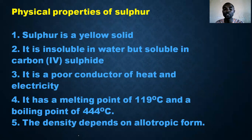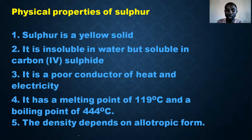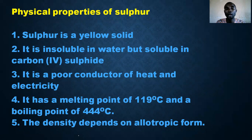Finally, the density of sulfur depends on its allotropic form. Different allotropes do not have the same density — for example, rhombic and monoclinic sulfur have different densities. Monoclinic sulfur has higher density than rhombic sulfur.